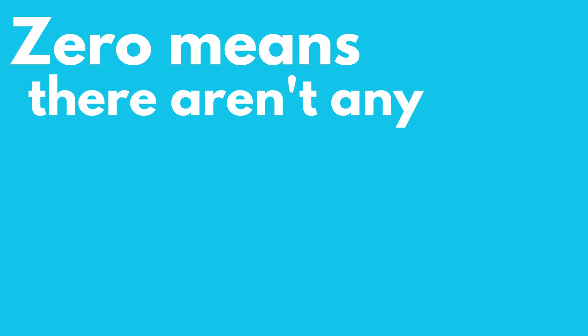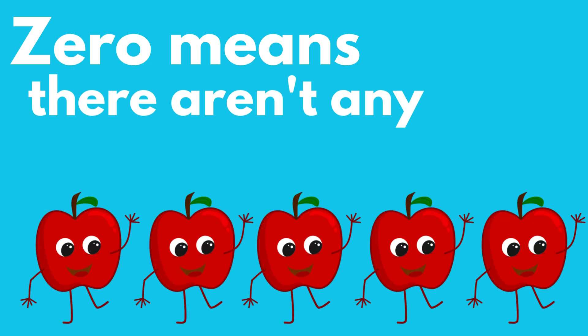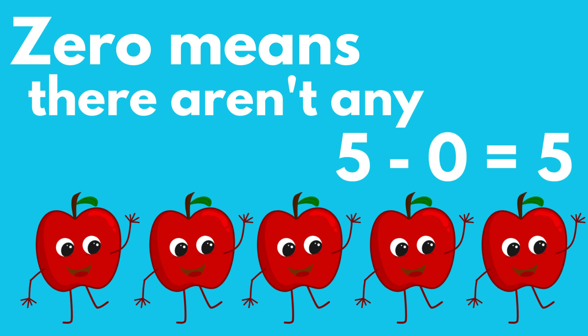Let's start with an example. Imagine you have five apples. If you don't take any apples away, how many apples do you have? That's right — you still have five apples, because zero means nothing was taken away.